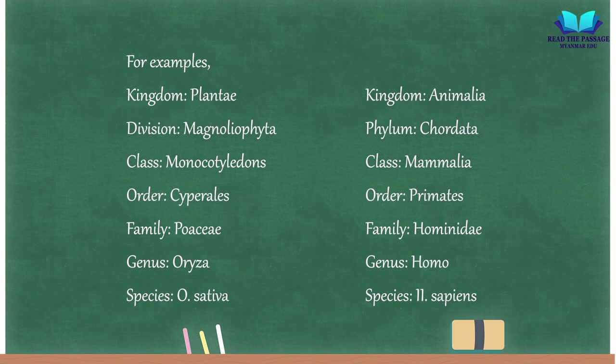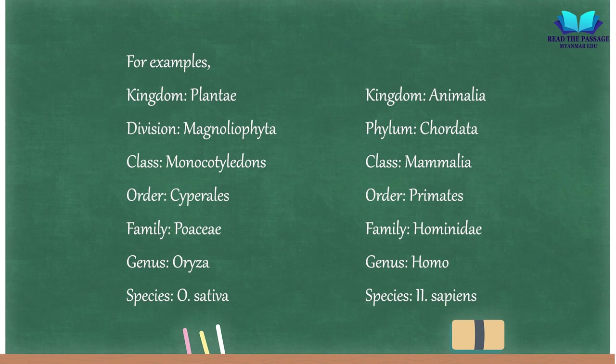For examples of taxonomic classification: Kingdom Plantae — Division Magnoliophyta, Class Monocotyledons, Order Cyperales, Family Poaceae, Genus Oryza, Species O. sativa (paddy). Kingdom Animalia — Phylum Chordata, Class Mammalia, Order Primates, Family Hominidae, Genus Homo, Species H. sapiens (human).